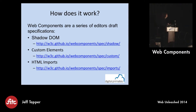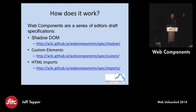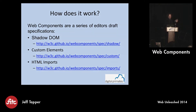So ultimately, how does it work? There are a couple of different specifications that come together to give us Web Components today. Shadow DOM is one of the important ones — the links here are to the latest versions of the specifications. Currently all three specifications are in Editor's Draft, they are subject to change, but they're much more stable than they were just six months ago. Custom Elements is another one of the specifications, and HTML Imports is the third one, and we'll talk in more detail on all of these.